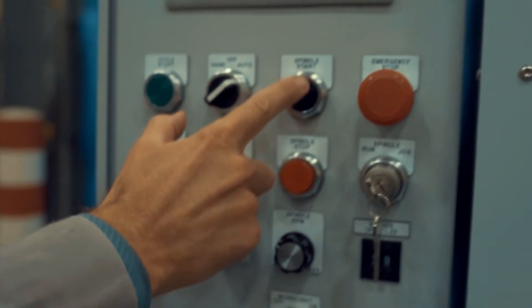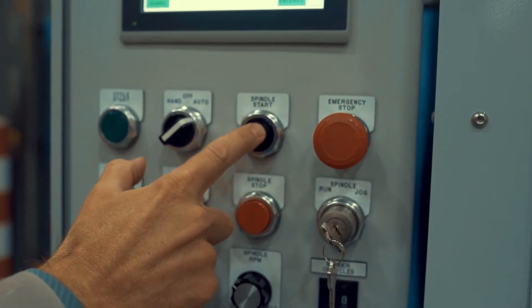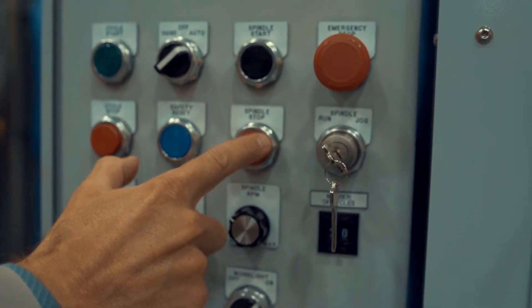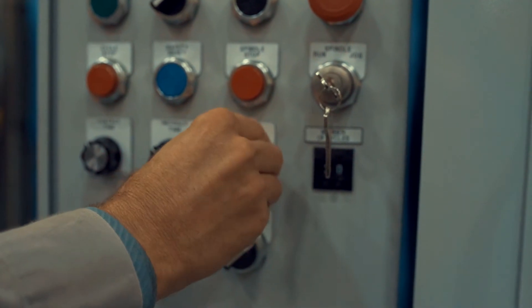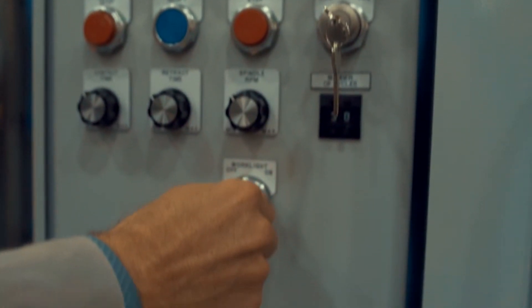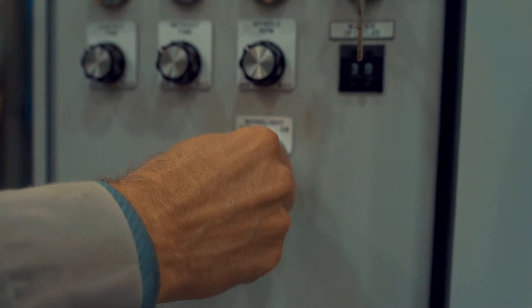The spindle start and spindle stop buttons function only when the machine is in the jog mode. The spindle RPM is settable and appears again on the man machine interface. The work light button allows you to turn the light on or off inside the machine.